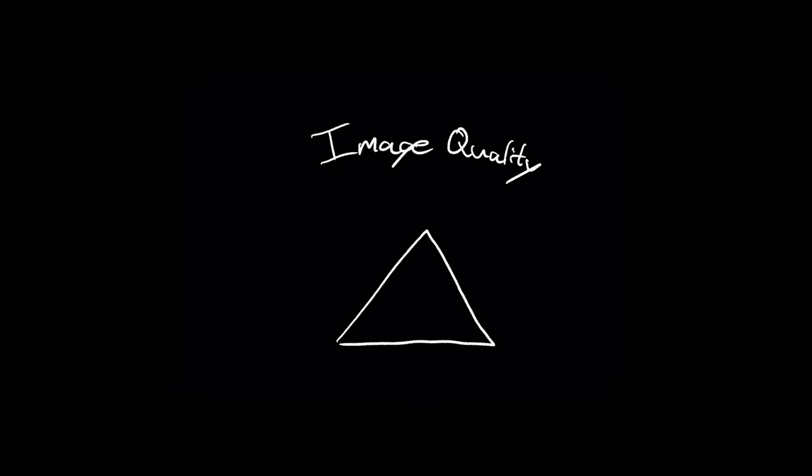However, first we're going to be talking about something really important. We're really quick going to discuss the quality triangle for photography. In this quality triangle, we have three different factors: we have price, we have image capability, and we have image quality.